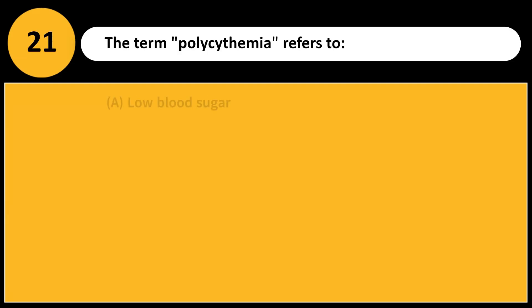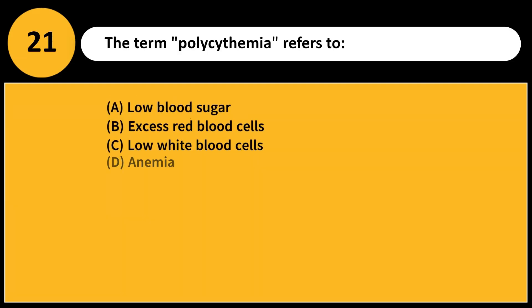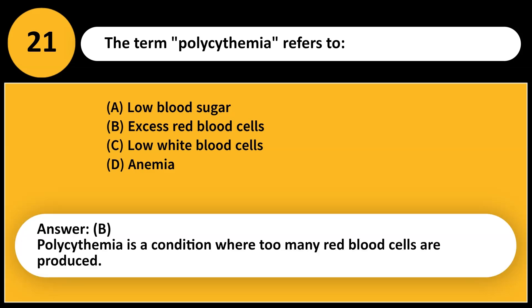The term polycythemia refers to: A. Low blood sugar B. Excess red blood cells C. Low white blood cells D. Anemia. Answer: B. Polycythemia is a condition where too many red blood cells are produced.